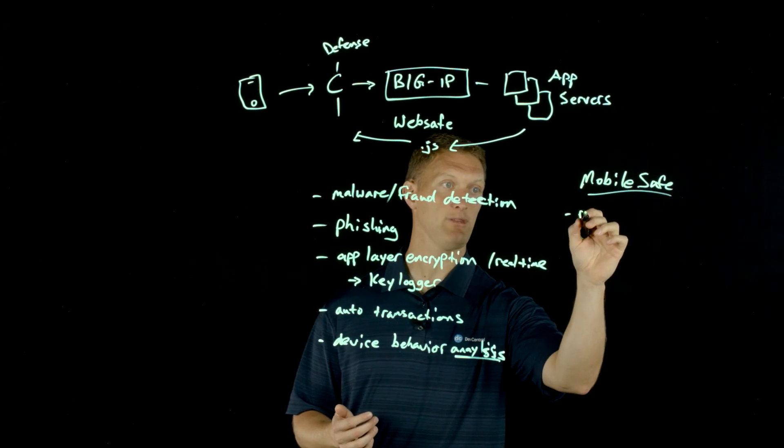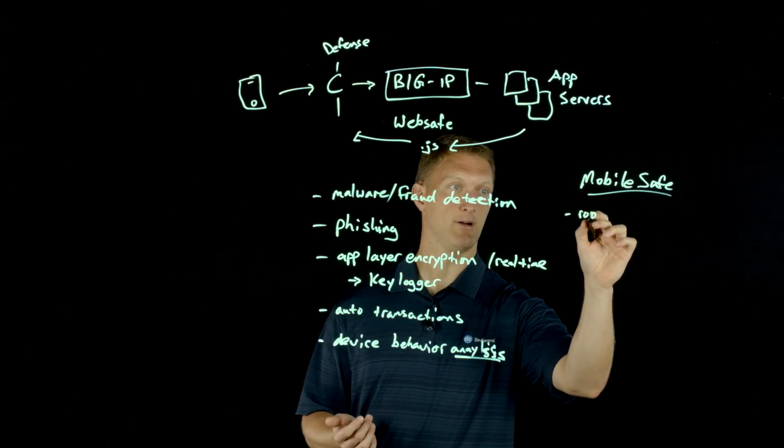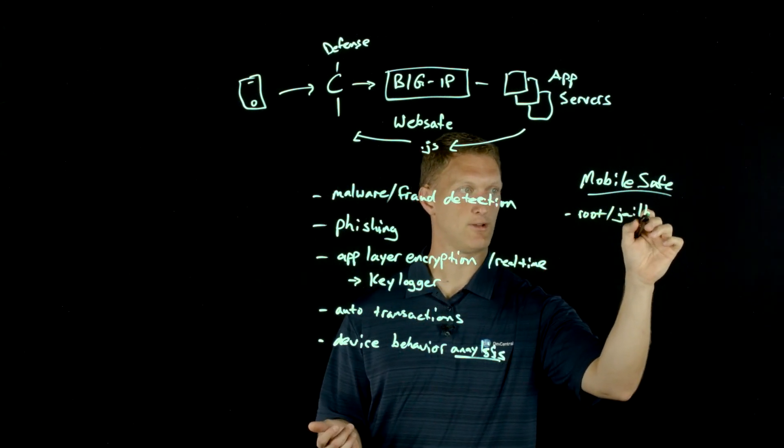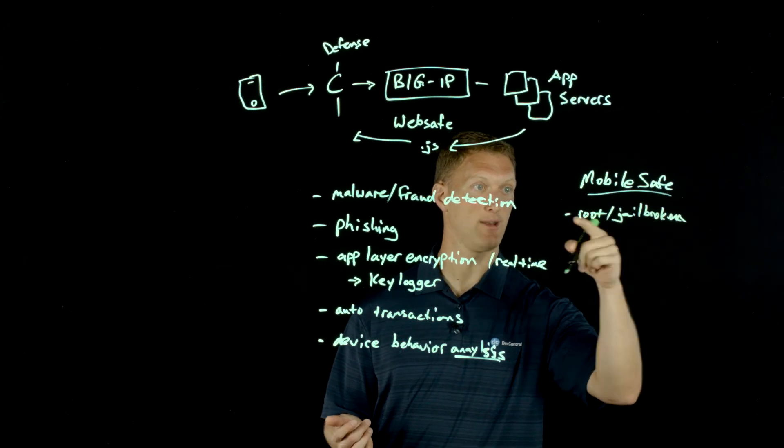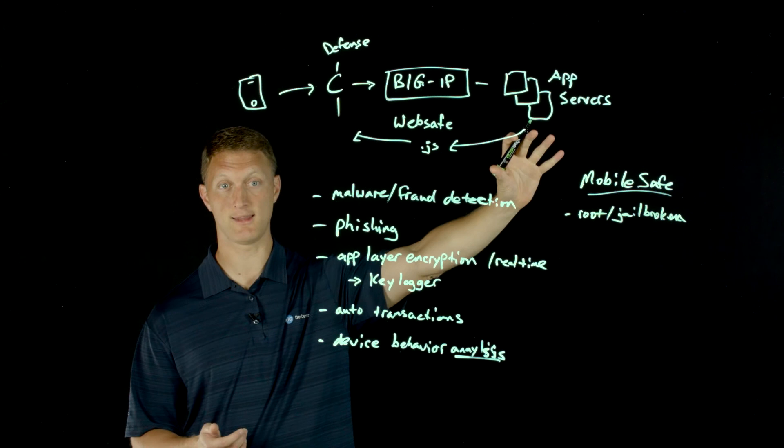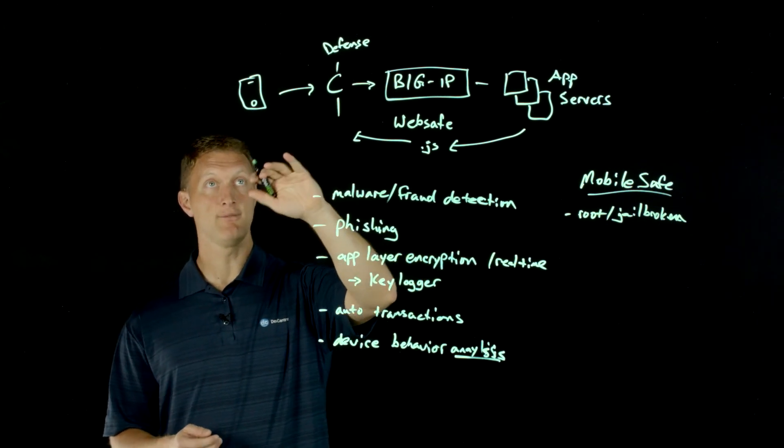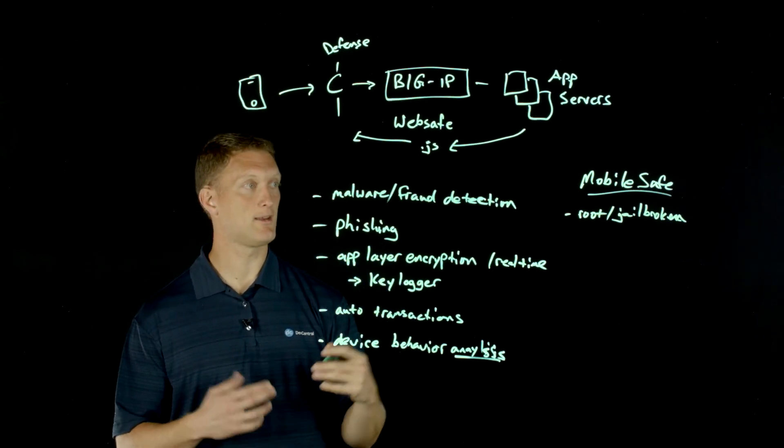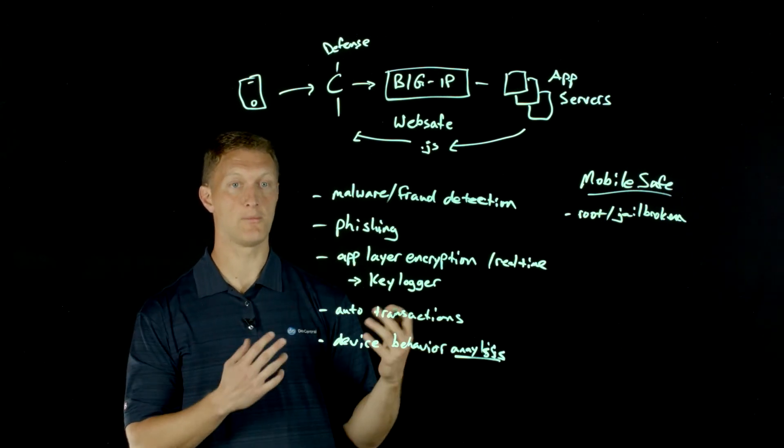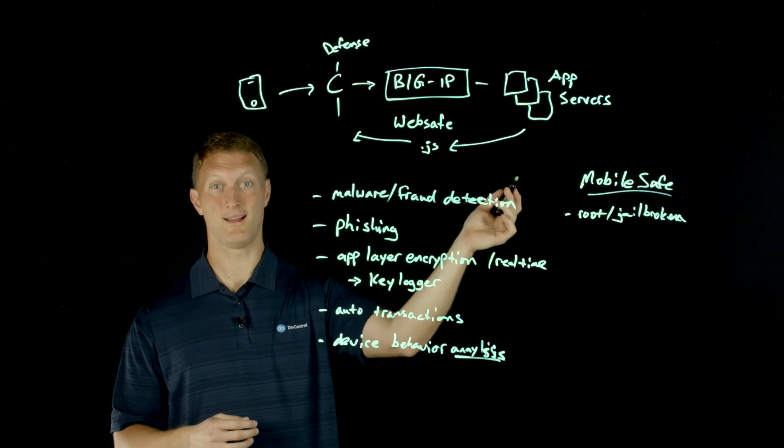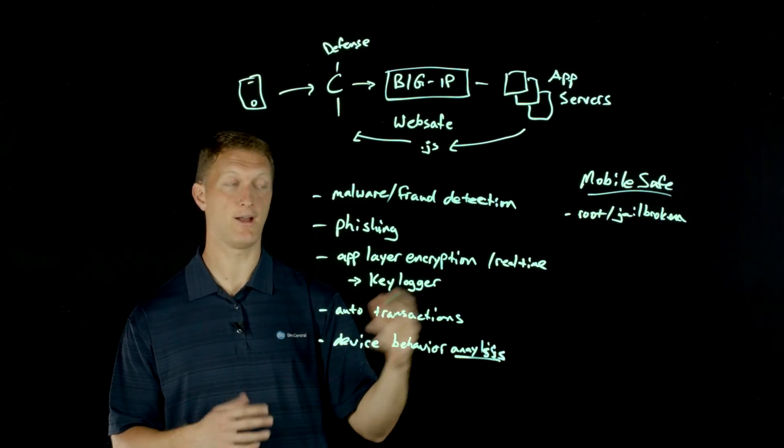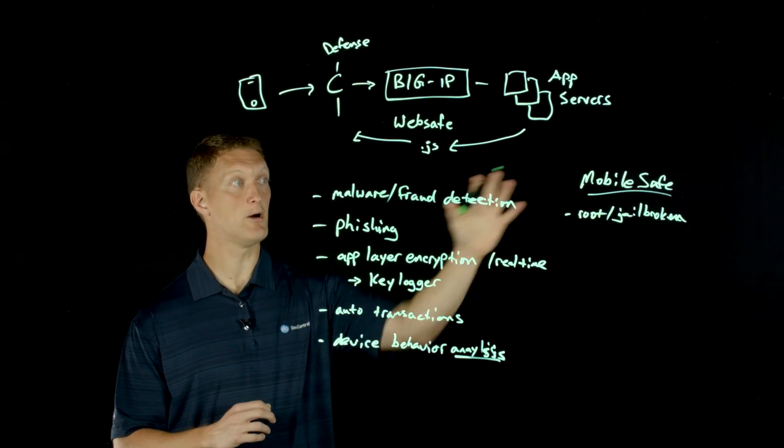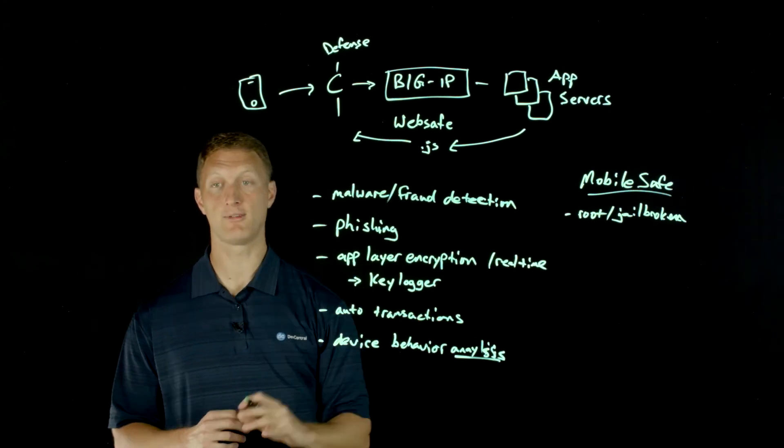What MobileSafe is going to do is do very similar things just on the mobile device. So it can do things like maybe a root or maybe a jailbroken device. So I'll put jailbroken. It can actually detect if something has been rooted or jailbroken and say, hey, we're not going to let that kind of device in. It can also detect the known good behavior from a mobile device into your application, into your web applications. And it can say, hey, this is what we expect as good behavior from a mobile device, but we're starting to see other than good behavior from this mobile device. And so we're going to not let that access our application server. So MobileSafe is another thing you can add on to the WebSafe product as well.